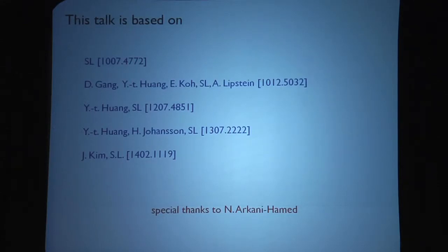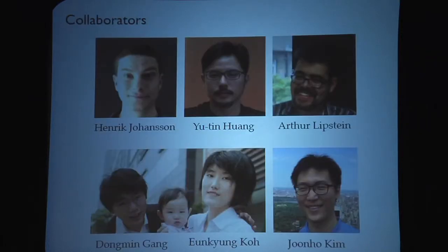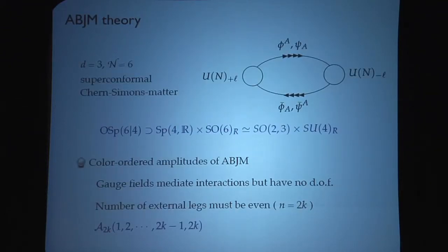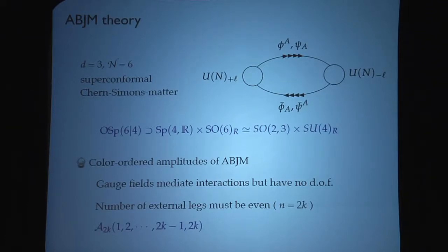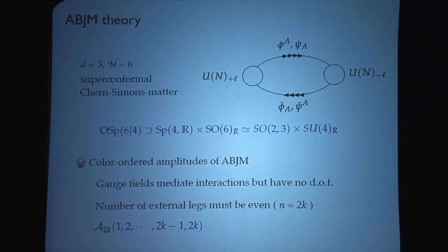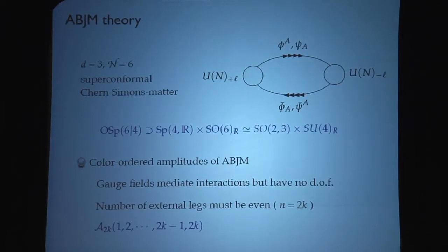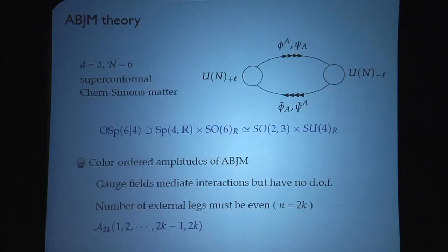The talk is based on these papers, and here are my collaborators with varying degrees of expertise and maturity. We have seen ABJM theory at this conference several times. It's a three-dimensional N=6 superconformal Chern-Simons matter theory. We have four complex bosons and fermions which transform covariantly under the SO(6) R-symmetry. We study the color-ordered amplitudes of this theory. Since this is a Chern-Simons theory, the gauge fields don't appear as on-shell degrees of freedom — they just mediate the interactions. So the external particles of the scattering process will always be these bifundamental fields, and the number of external particles must be even, labeled by 2k.